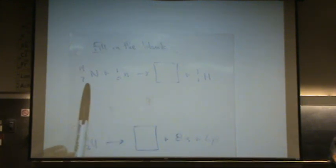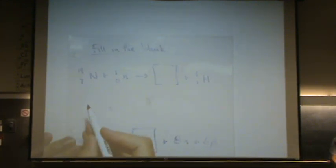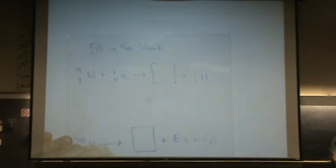So first is this here. Let's try to balance this. Here is 7 plus 0, so a total of 7 on the left. On the right hand side, 1. So we'll have a 6 here. And then 14 plus 1, that's 15. Whatever plus 1, that would be 14 again.